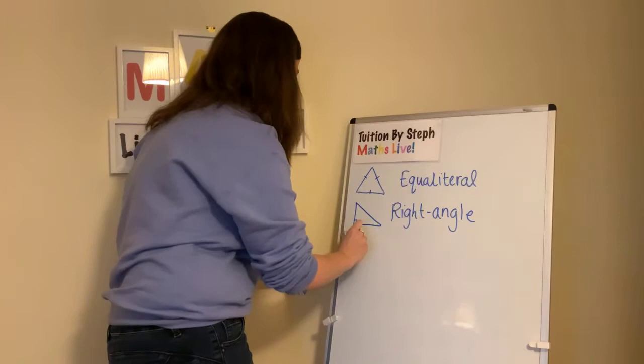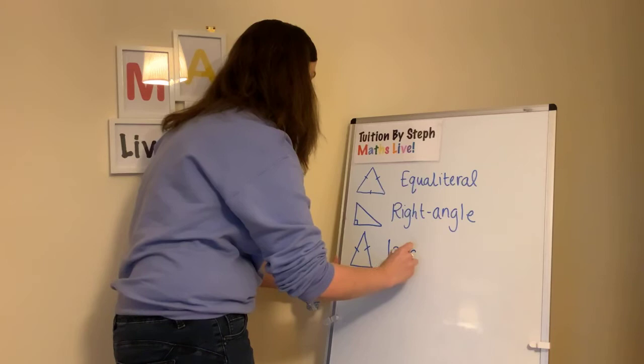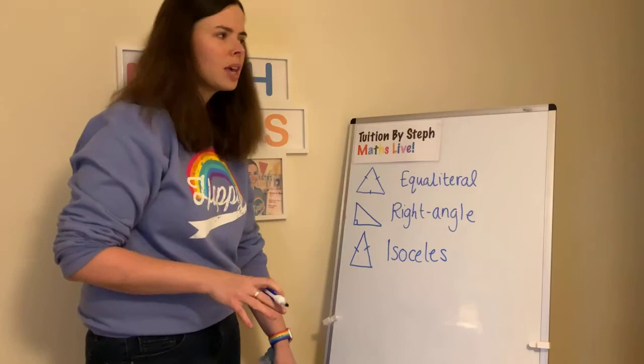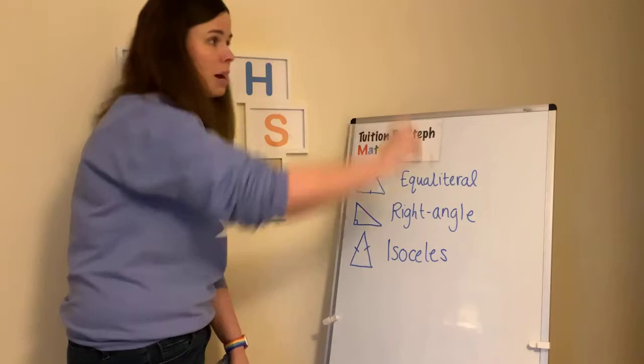The third one — you might know this one as well. In this triangle, these two sides are the same length, and this is called an isosceles triangle. So we've got three. Those are the traditional ones you're taught at school. This is the trickiest one because it's the hardest to remember, and there are different ways of drawing an isosceles triangle.